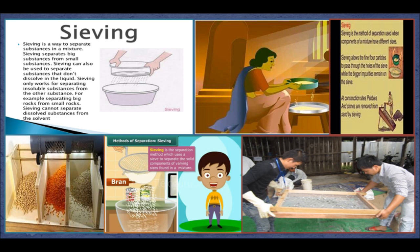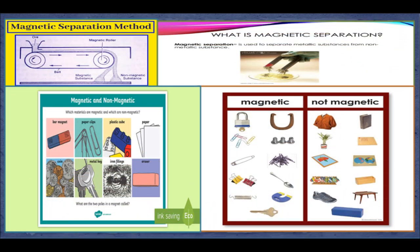Sieving is used for separating components of a mixture based on particle size. A sieve is usually made of woven screen such as mesh or net. Pores in a sieve allow smaller components to pass through while retaining larger ones. Sieving is commonly used to separate bran from wheat flour and gravel from sand. Magnetic separation: some substances are attracted to a magnet and are called magnetic substances. In a mixture where one component is magnetic and the other is not, a magnet can be used to separate them. For example, iron fillings mixed in sand can be separated this way — the iron sticks to the magnet while sand is left behind.